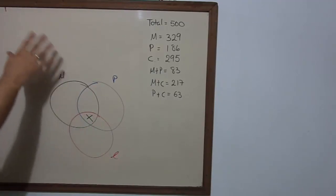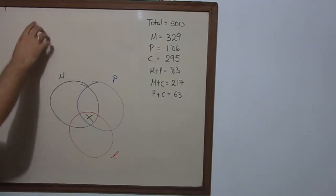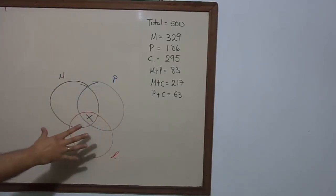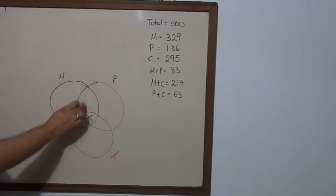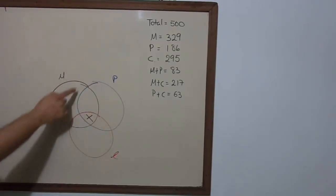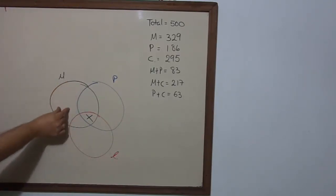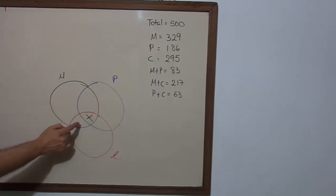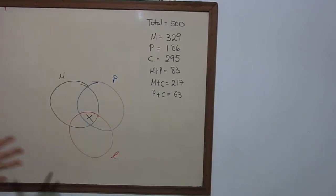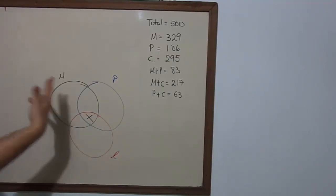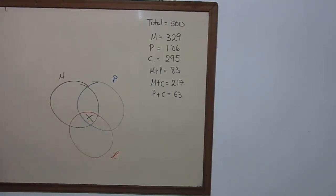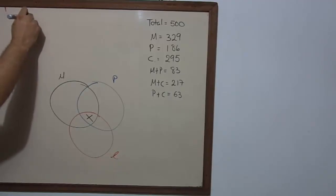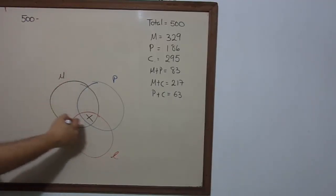The result is 500 minus the operation that we just did. Once again, 500 students are placed everywhere — in the single spaces, in the areas, in the specific areas. So if you add all those areas including x, you get 500. Notice that 500 includes x. So 500 minus the black set...